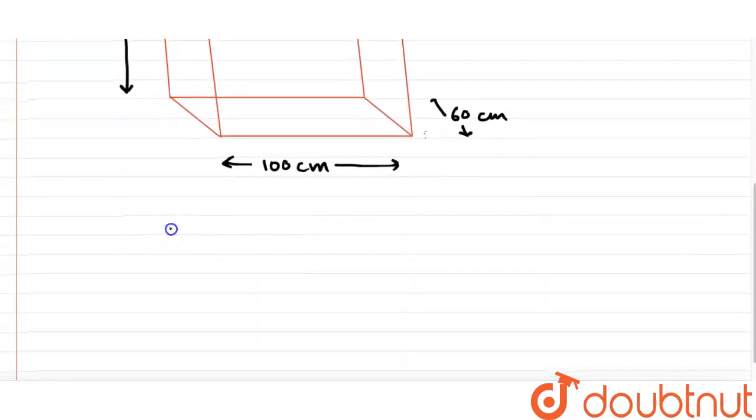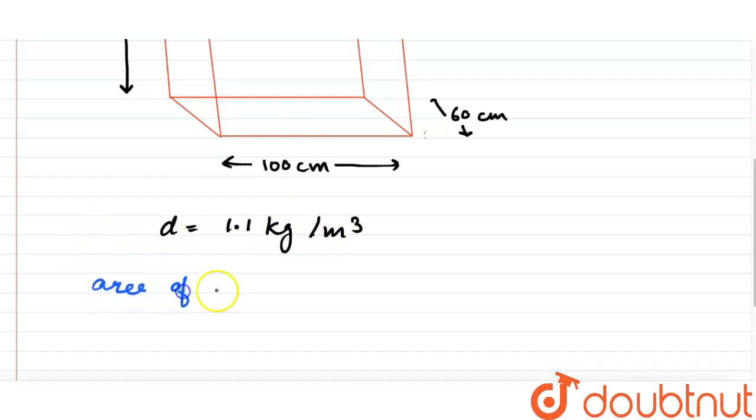Density is given to be 1.1 kg per meter cube. We need to find thrust at the bottom, so first of all let's find the area. Area of bottom of vessel